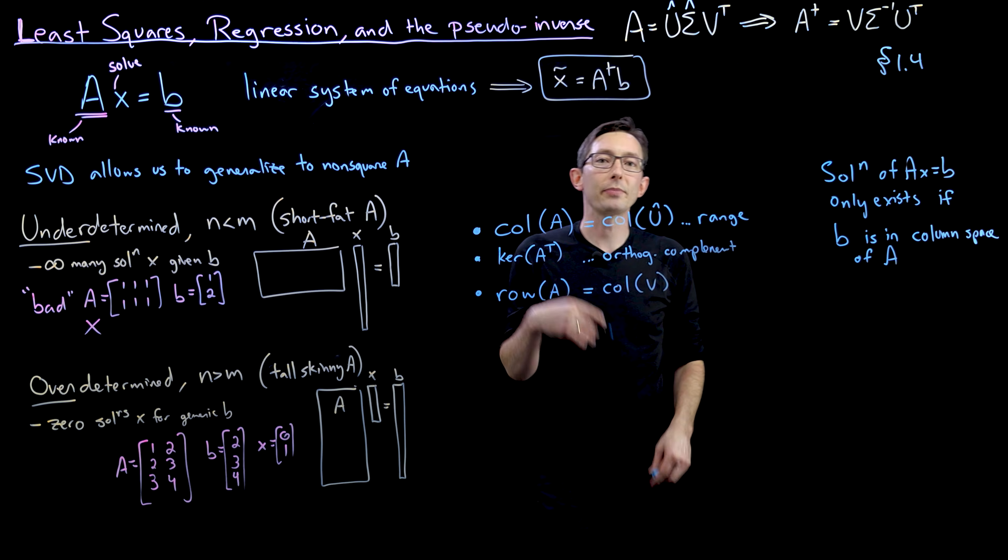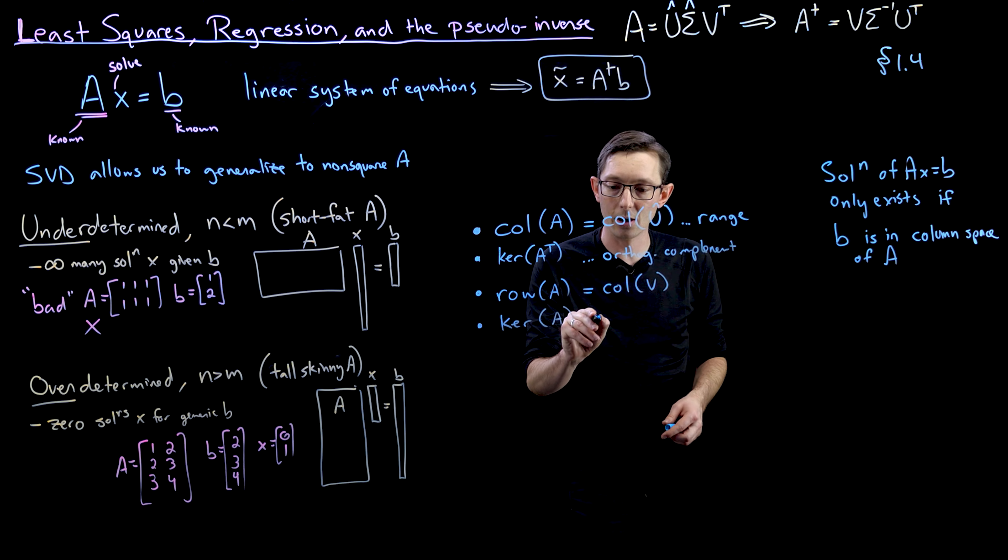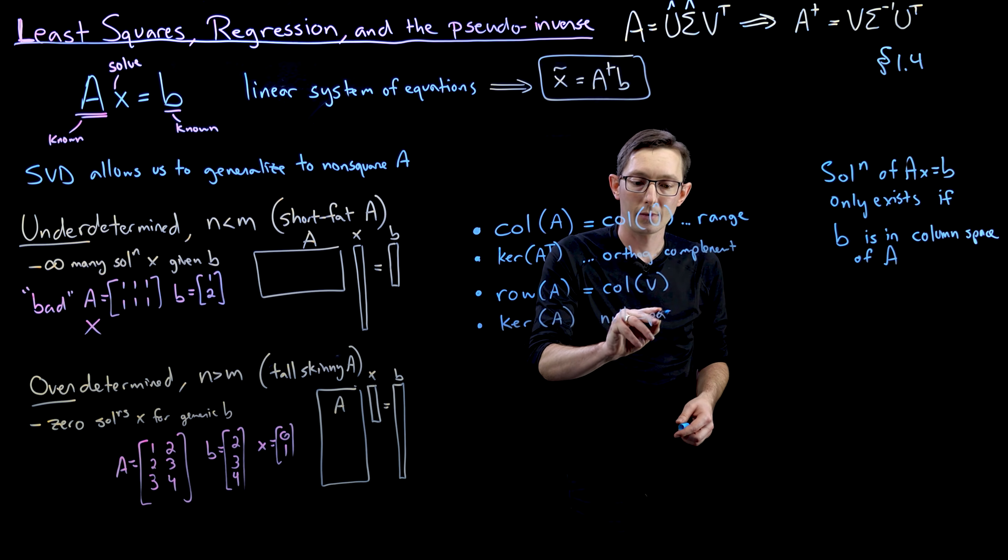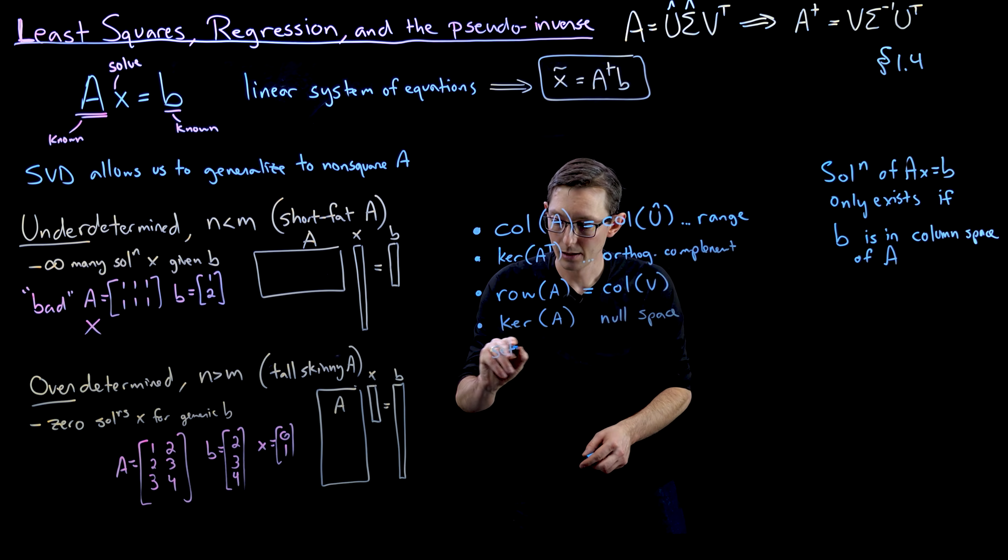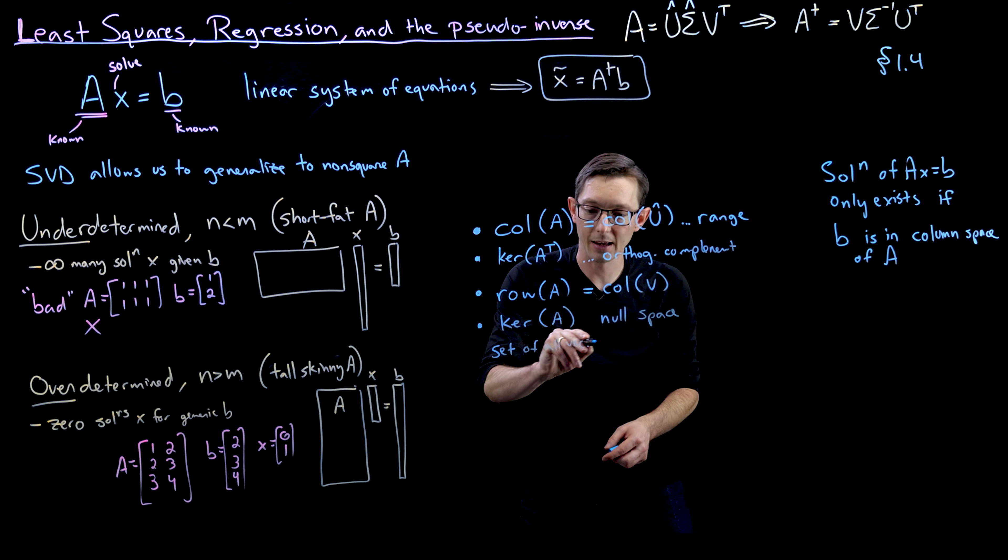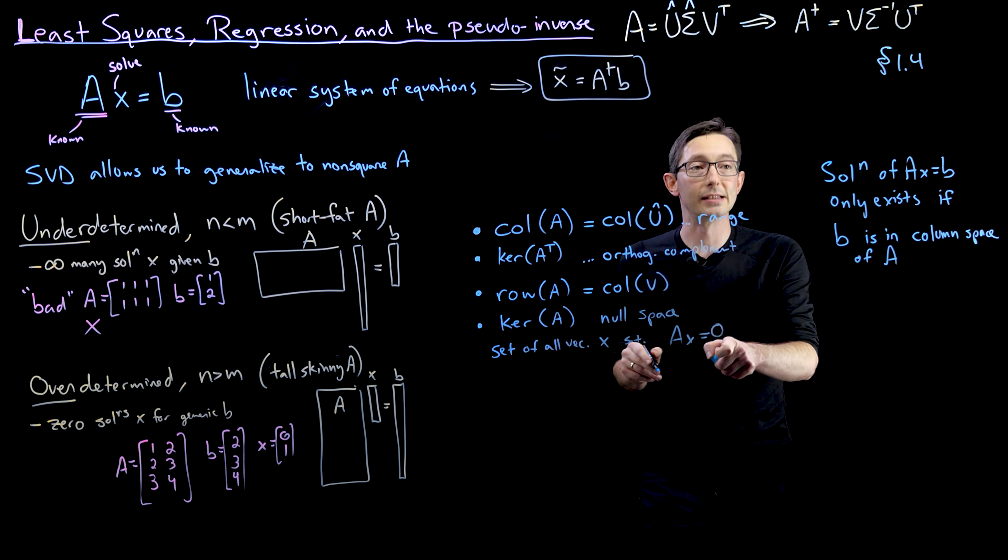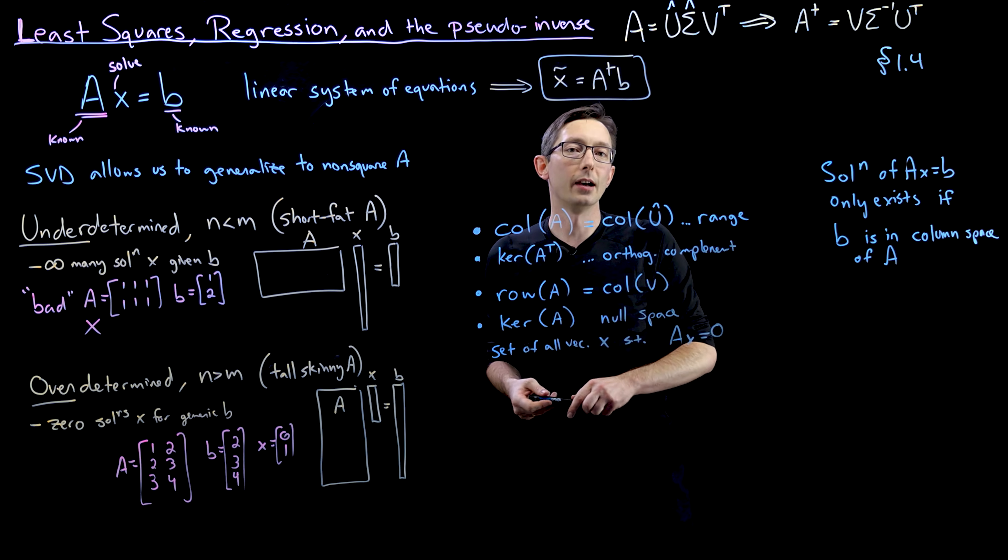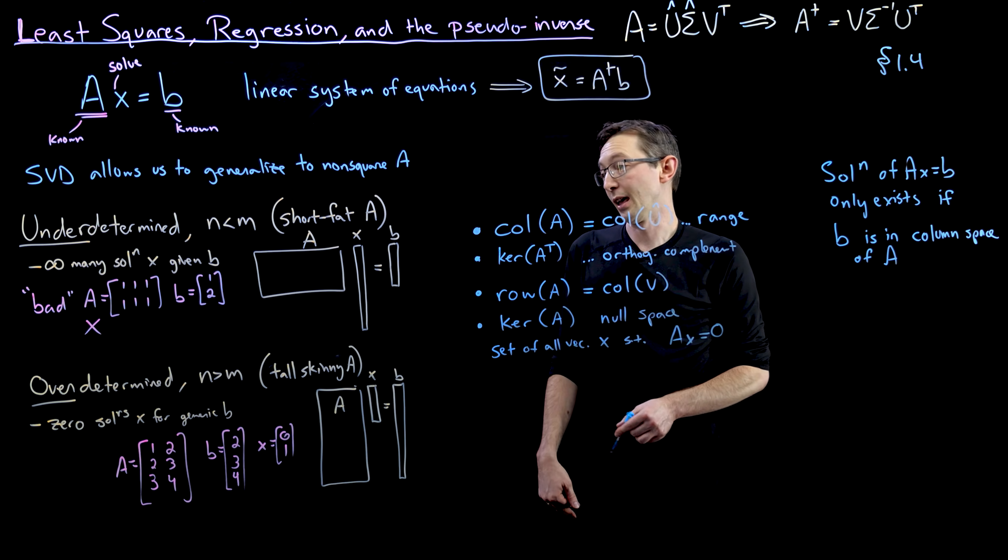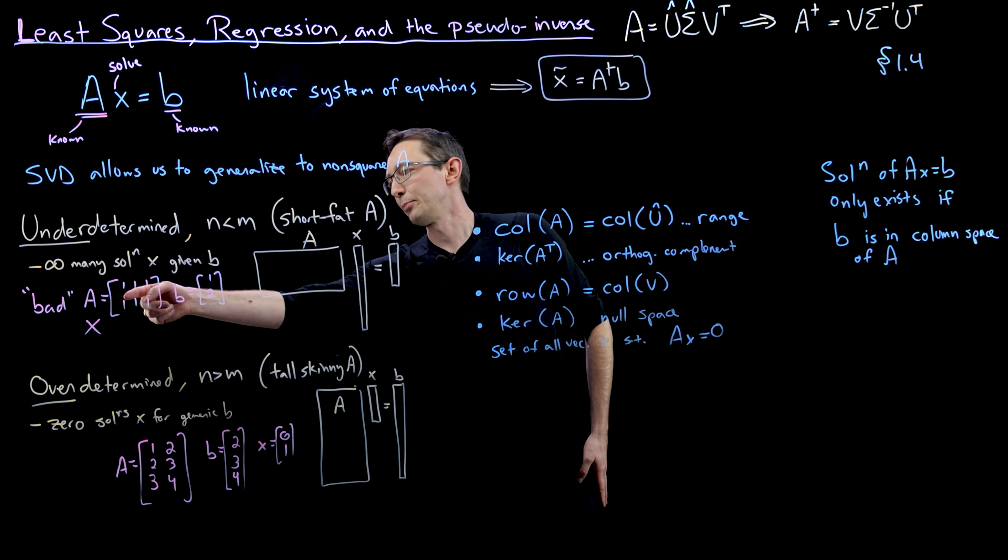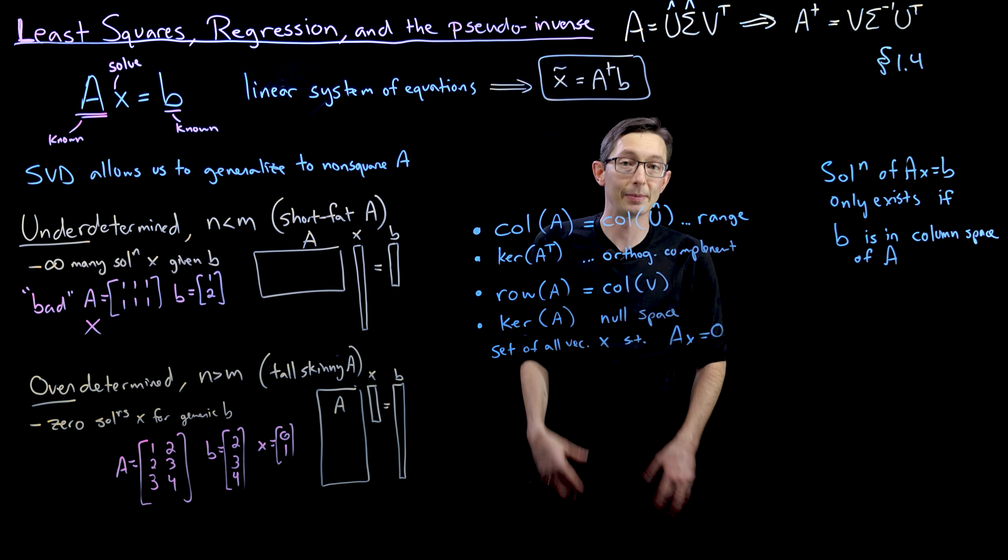That's pretty useful. And then the last subspace I'm going to talk about is the kernel of A, and this is known as the null space. This is the set of all vectors X such that AX equals 0. It's a very, very important set. It's all of the vectors X that map to 0 by multiplication with A. So for example, in this example, the vector 1, negative 1 is in the null space of this matrix because that maps to 0.